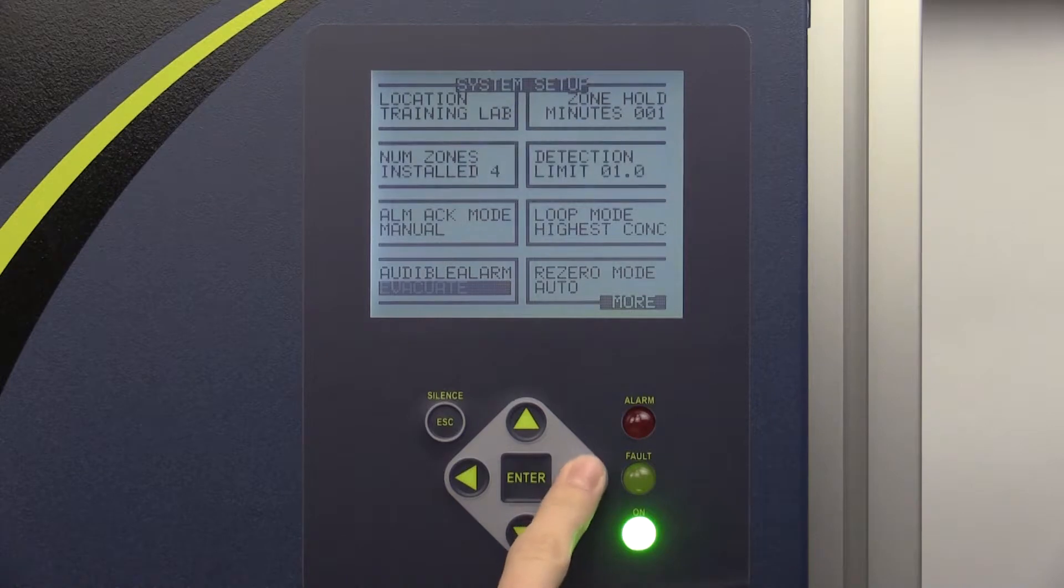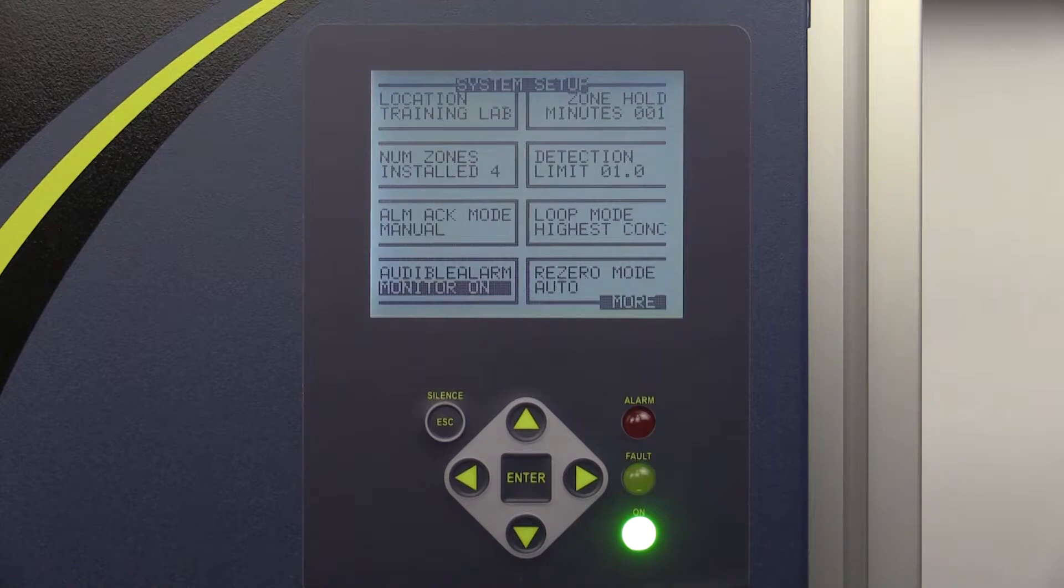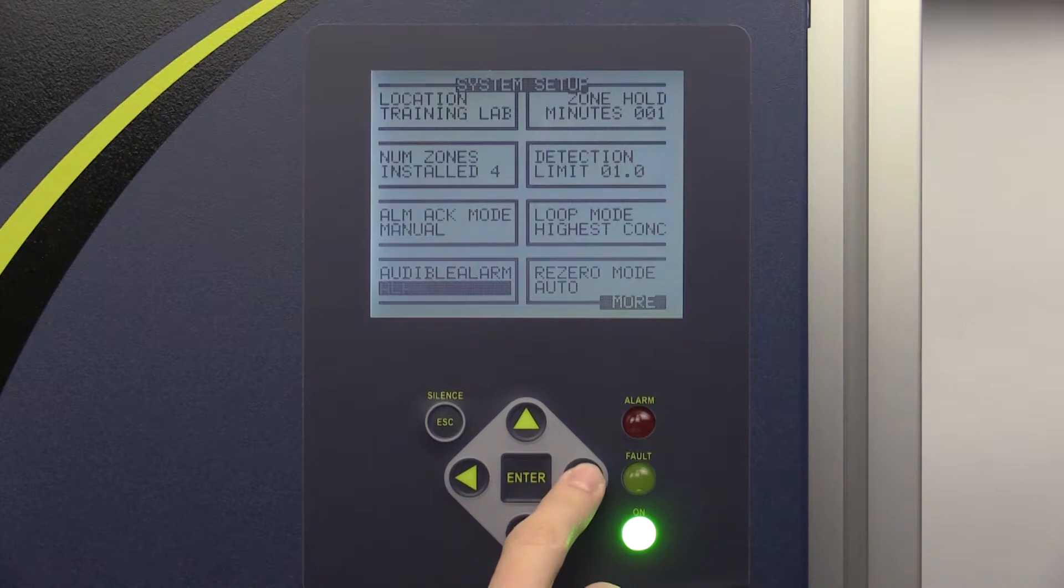The monitor on option causes an audible alarm to sound only when a critical fault occurs that stops the unit from monitoring. When the unused option is selected, no audible alarm will sound. When the alarm option is selected, an audible alarm will sound any time an alarm goes off. When the fault option is selected, an audible alarm will sound any time a system fault occurs.